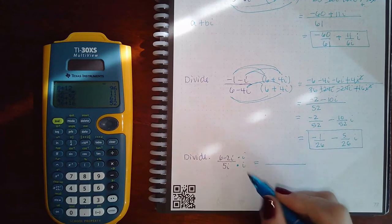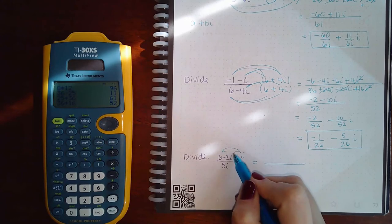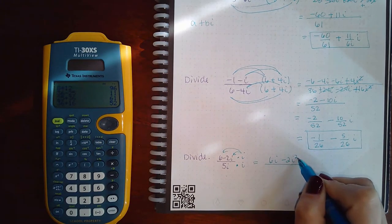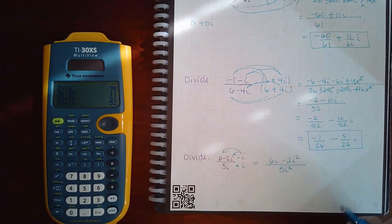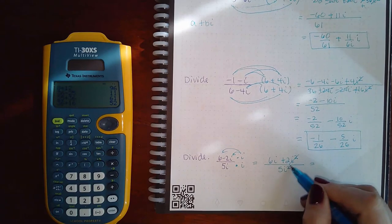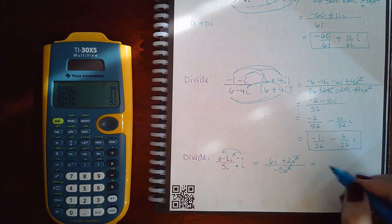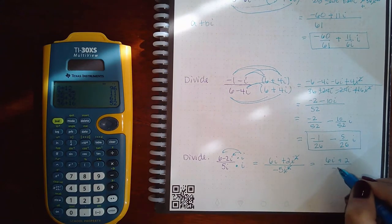So all I need is another i at the top and the bottom. So what happens here when you have a binomial times a monomial is this has to distribute giving me 6i minus 2i squared. And at the bottom, you end up getting 5i squared. Now we know that this is going to change this to positive and this is going to change this to a negative.